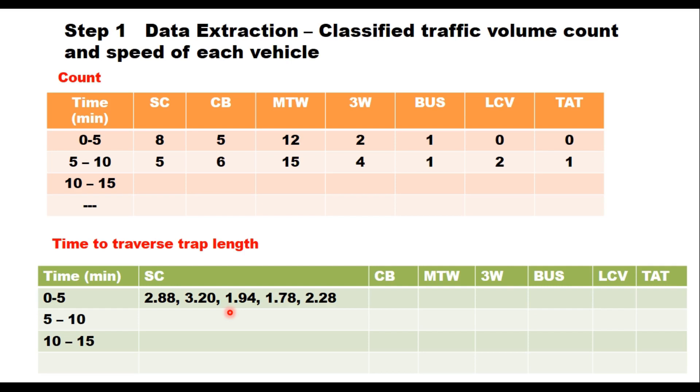Once you get this information then next step is to determine the passenger car unit. That is an important step to convert mixed traffic flow into homogeneous traffic stream. There are several methods of estimating passenger car unit. I have another video on the concept of passenger car unit where I have covered old methods of PCU estimation.